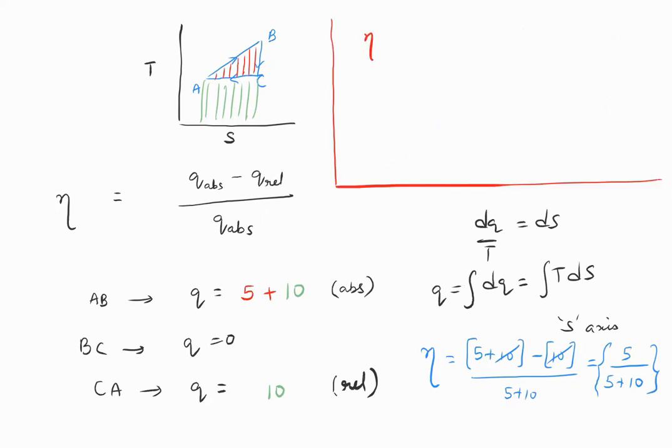In order to write the general formula, I'm going to use this case here. So efficiency is equal to 5. What is this number 5? It is this area, so it is actually area enclosed by the cyclic process. So it is area enclosed by the graph divided by...